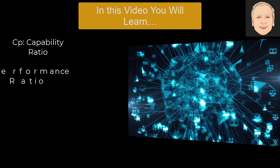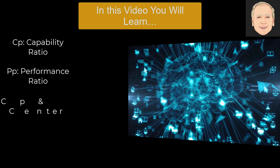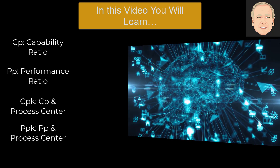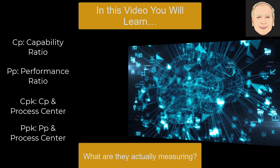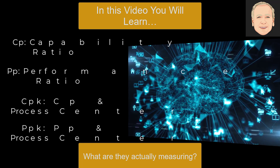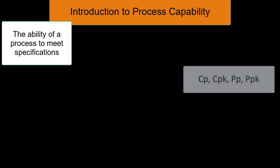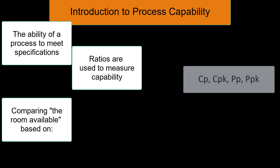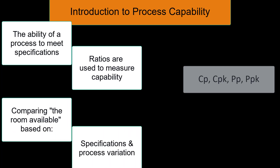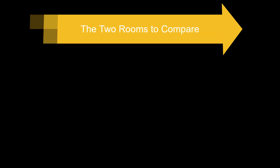We're going to talk about the capability ratio, the performance ratio, and then we're going to talk about whether or not a process is centered and how that impacts those metrics. These metrics measure the ability of a process to meet specifications — that's what process capability does. We use ratios to do that. It's a ratio of two rooms: one is the room that we have within the specifications, and the other is the room that our process needs to operate, typically plus or minus three standard deviations.